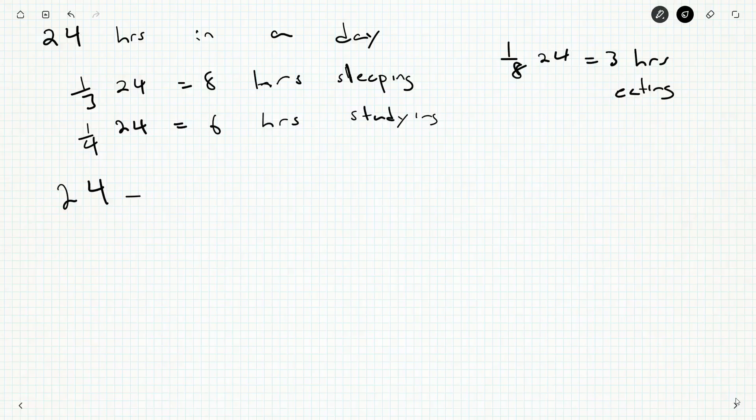So what's left over? 24 minus 8 minus 6 minus 3 is 16, minus 6 is 10, minus another 3 is 7. Of course, if you need to, grab a calculator, but you're going to be perfectly fine there.